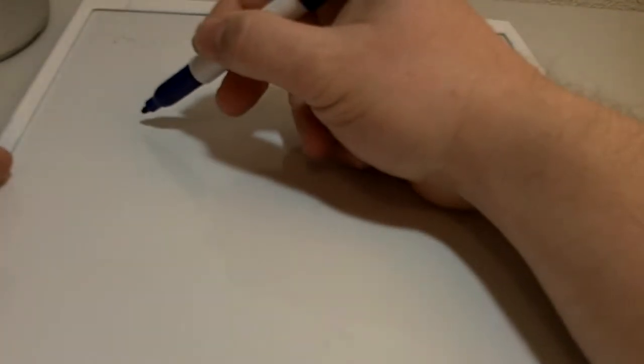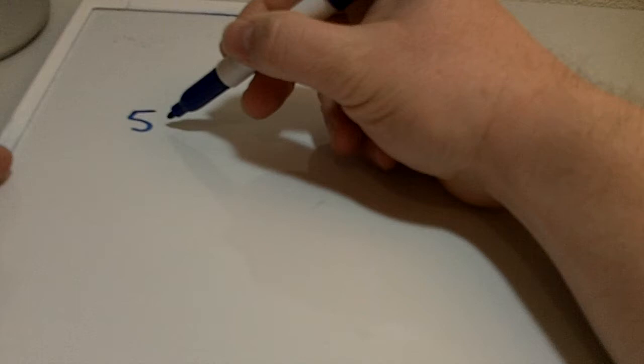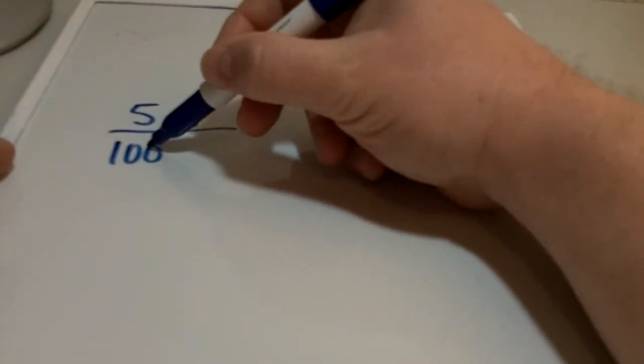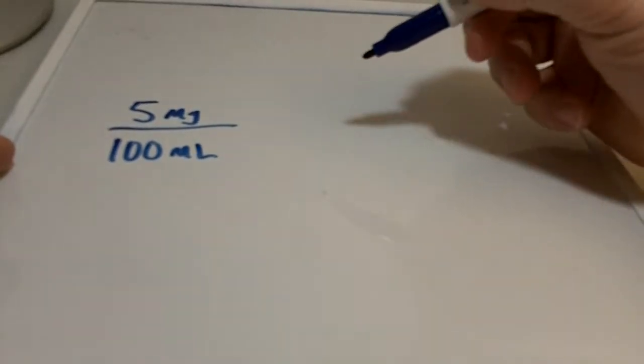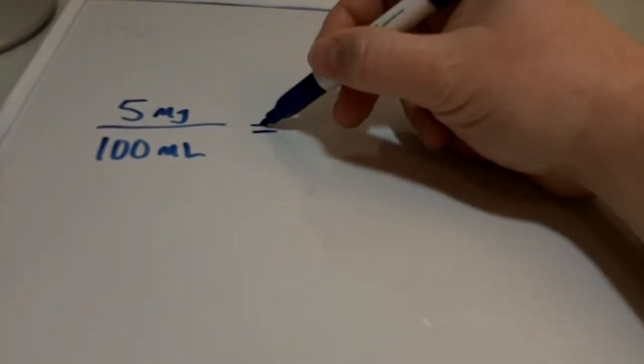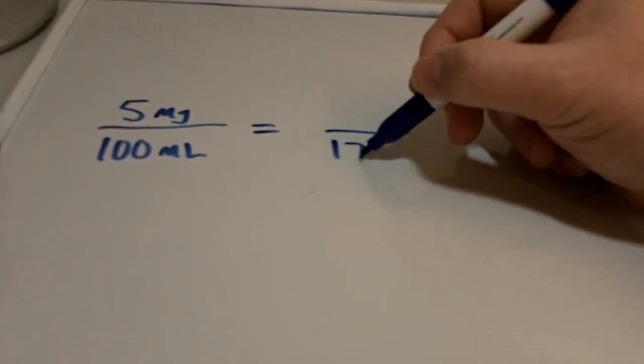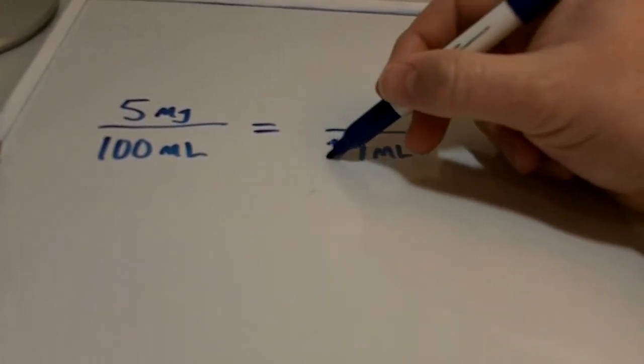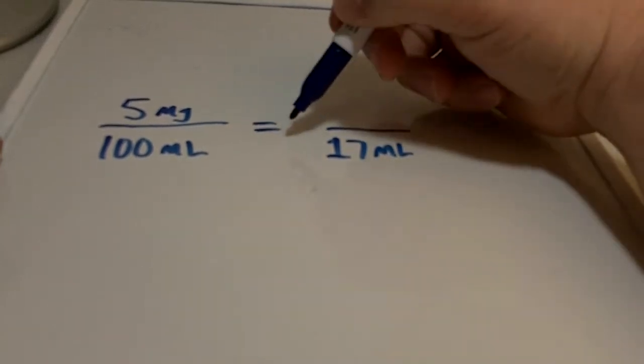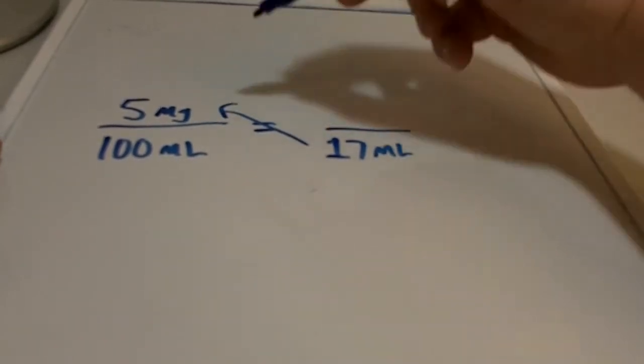Alright, so most everybody knows about proportions math, and it's a nice little shortcut to figure out things. For example, if you have 5 milligrams of drug diluted into 100 milliliters, and you want to find out how many milligrams would be in 17 milliliters.